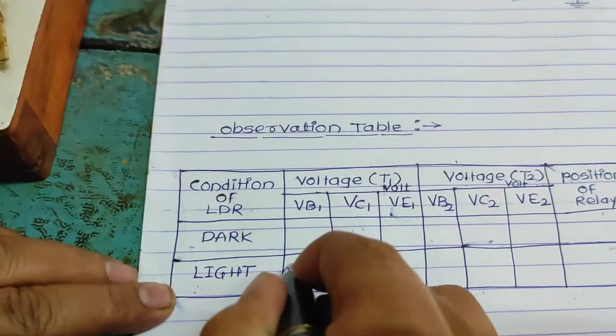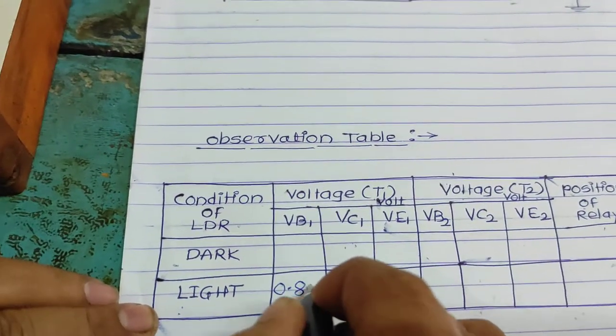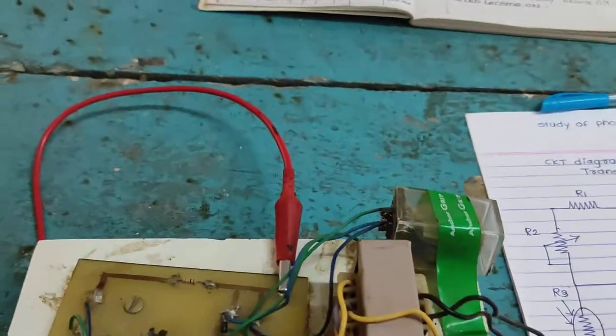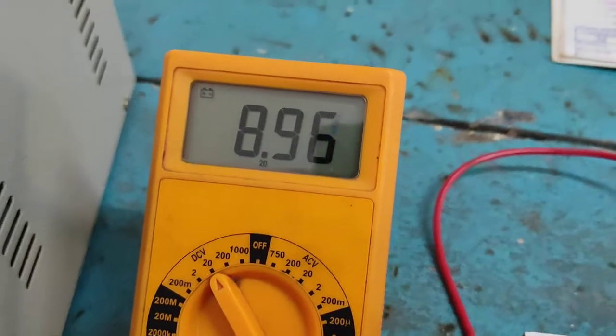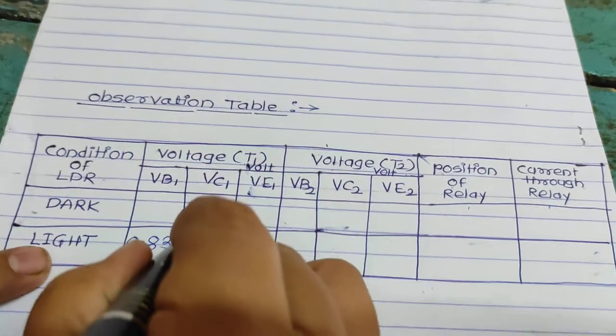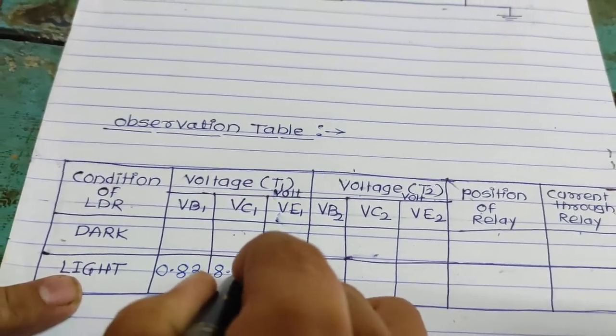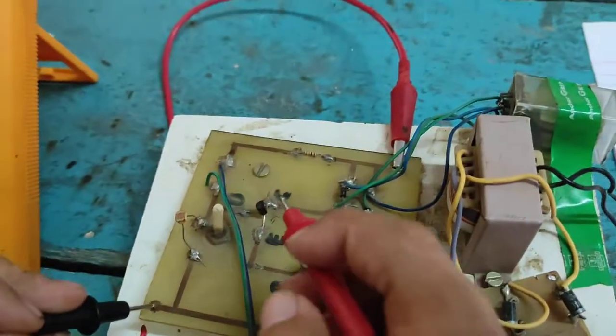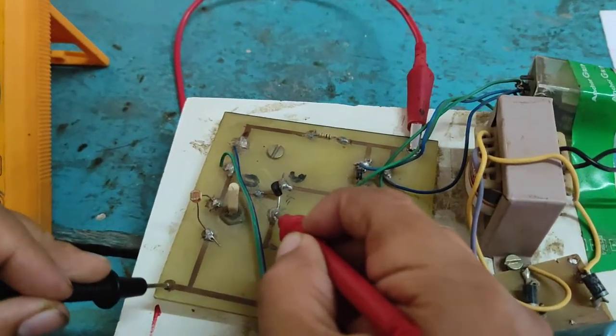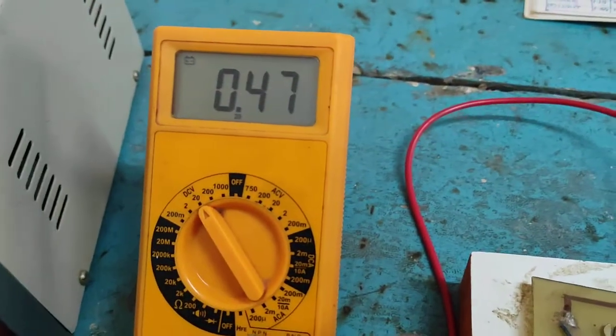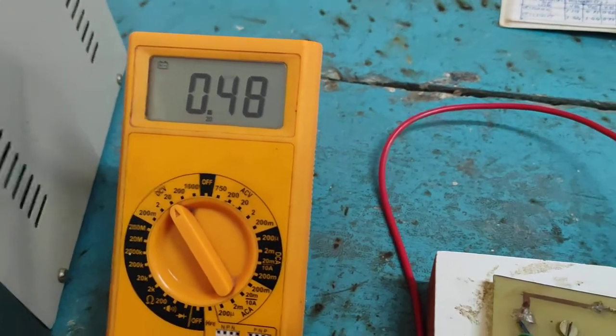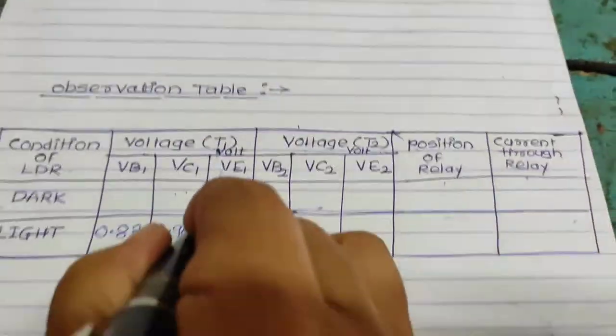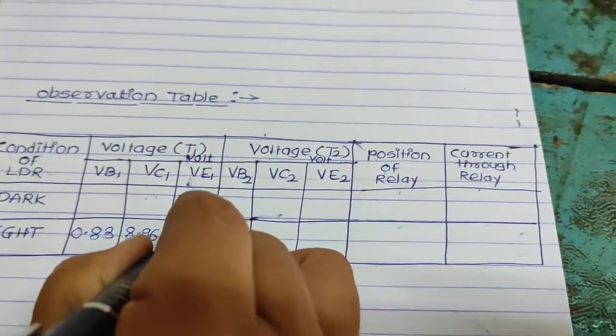Then measure VC 8.96 volt. Note down here 8.96 volt. VCE, VE1 0.51 volt.